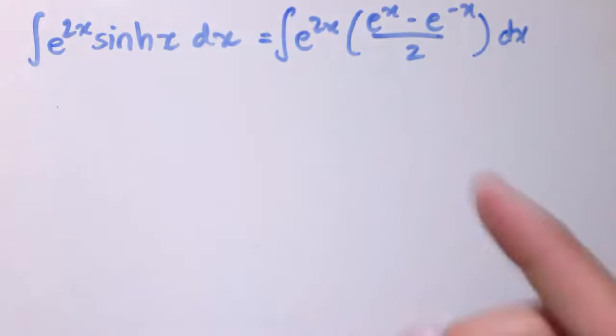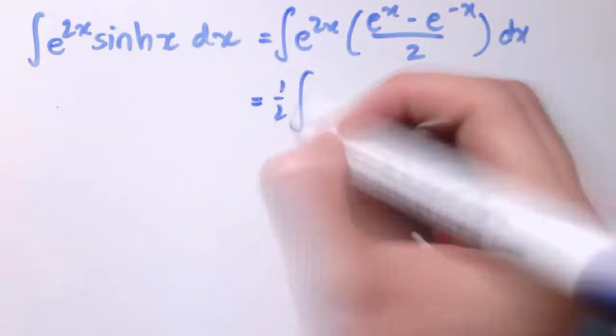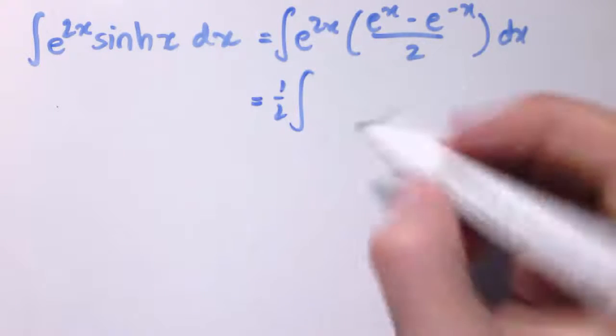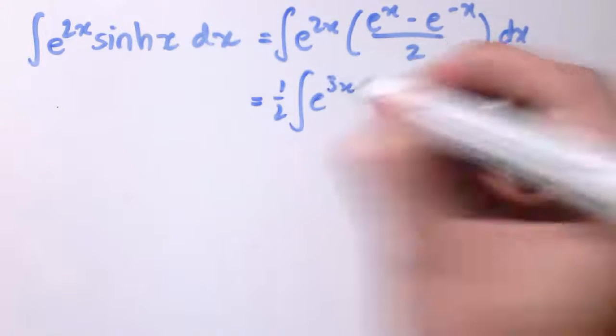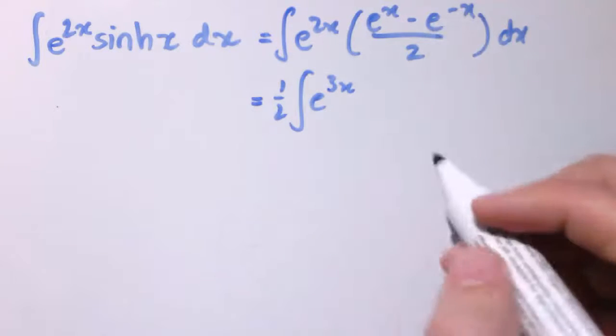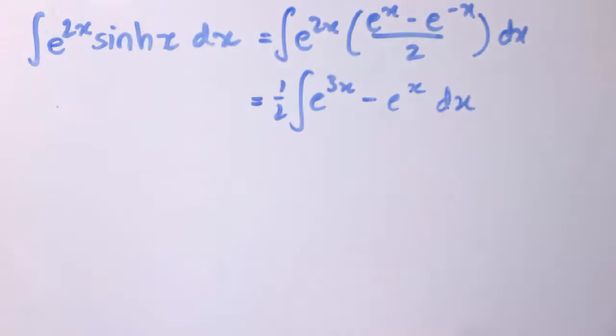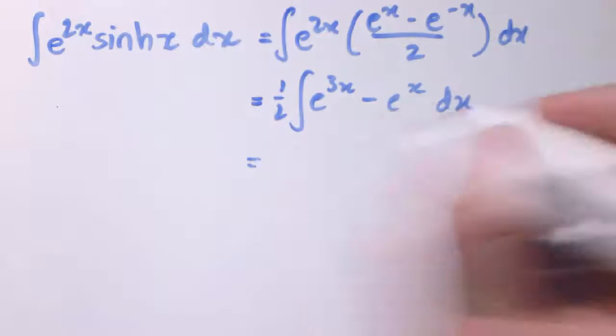And all we'll do now is just multiply this out. So let's pull out the factor of a half, and then I've got e^(2x) times e^x, that's e^(3x), and e^(2x) times e^(-x), that's just e^x, so I get minus e^x dx. And now we've got a nice simple exponential integral here.